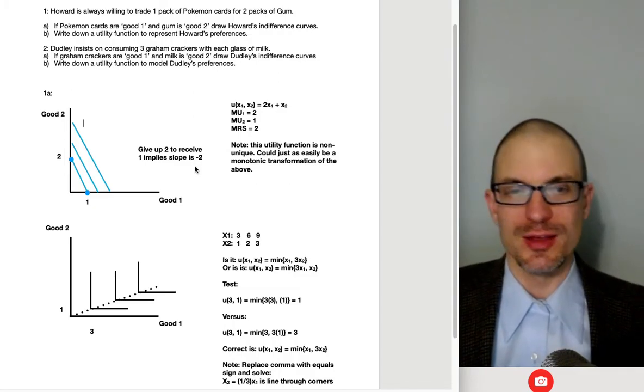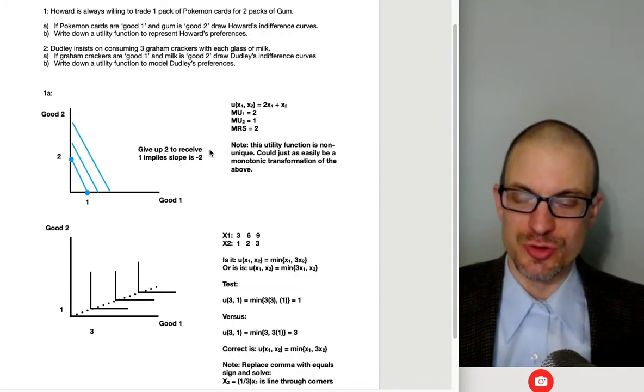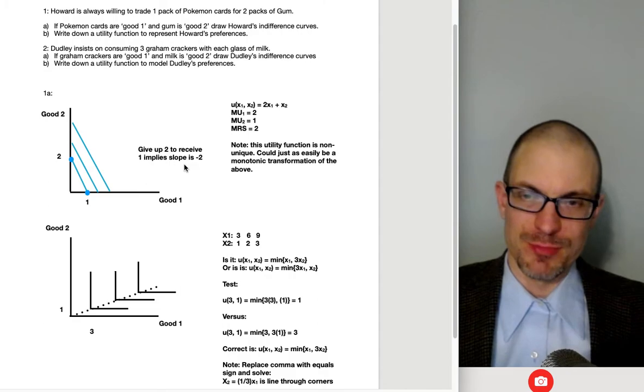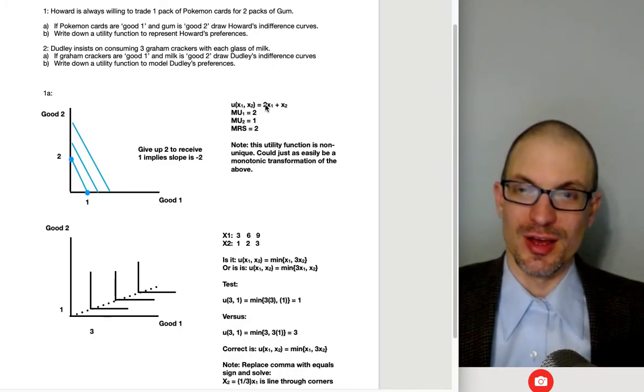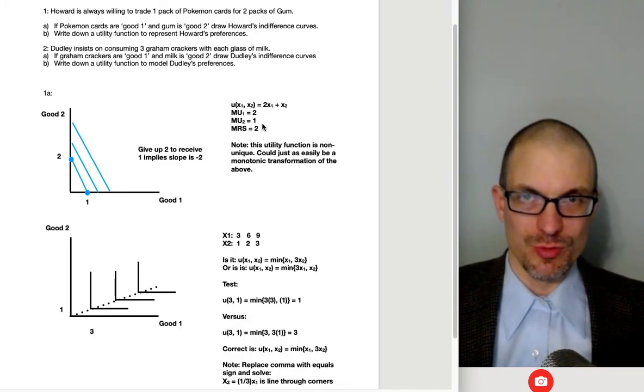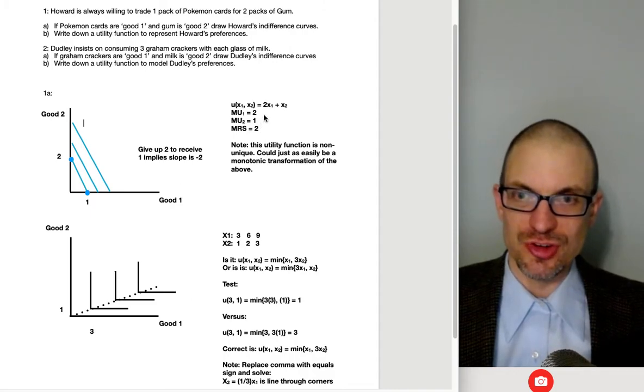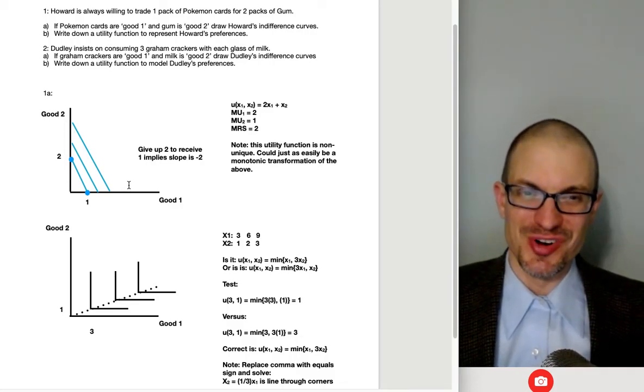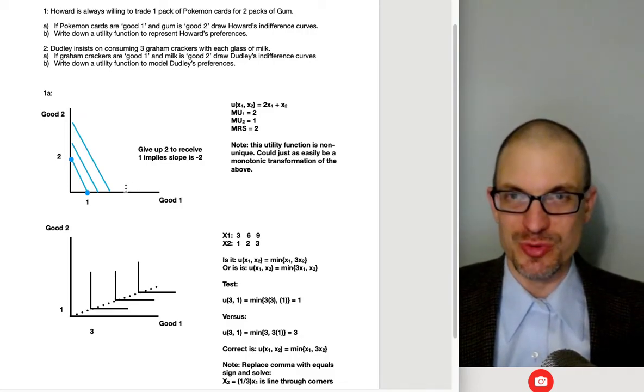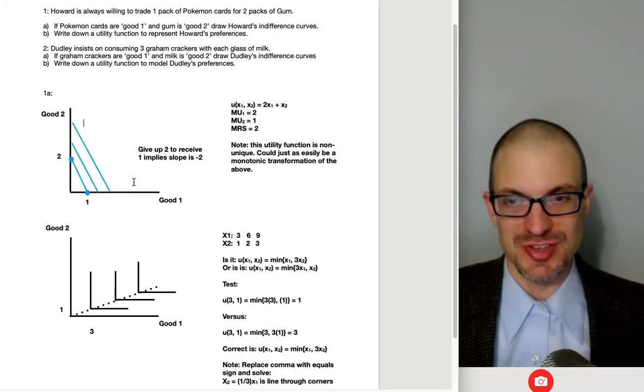But one of the reasons why we kind of are like always want to talk in terms of absolute value is because firstly, like it gets cumbersome to think about like putting a negative here. Also, if we think about when we're ultimately doing optimization, we're going to be comparing this marginal rate of substitution, which is corresponding to downward sloping indifference curves, to a price ratio, which is corresponding to a generally downward sloping budget constraint. And those negative signs cancel.